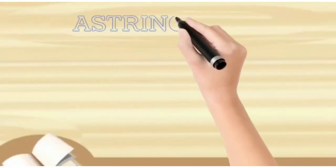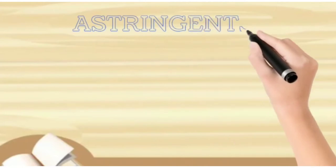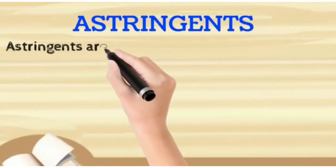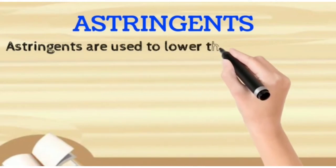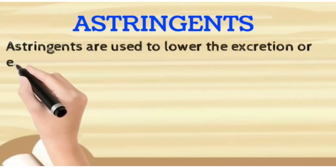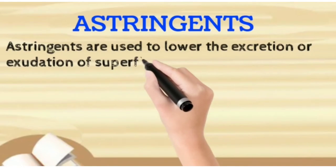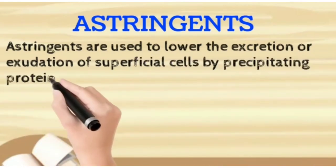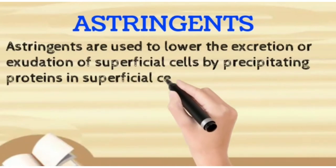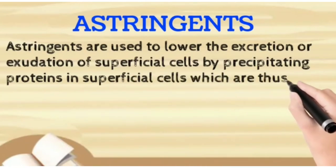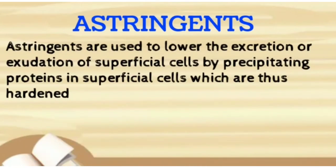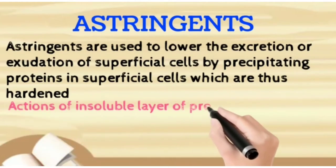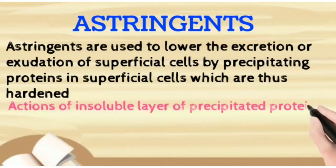Today I am going to talk about astringents. Basically, astringents are used to lower the excretion or exudation of the superficial cells. And how they do that? By precipitating the proteins in the superficial cells, and then it becomes harder. So, the actions of the insoluble layer of precipitated proteins — what are the actions of that layer?